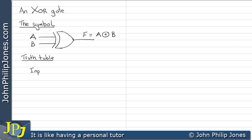Let's consider the truth table for this particular gate. Well, here are the inputs A and B. There's the output F.